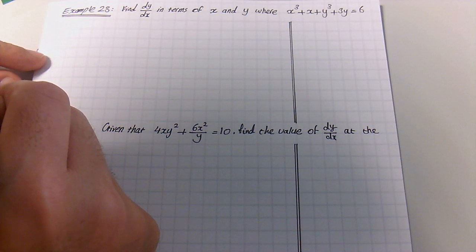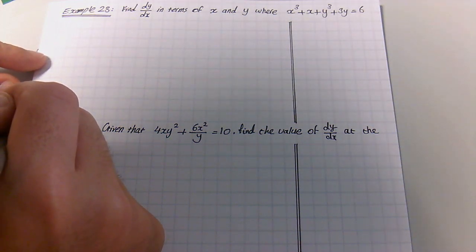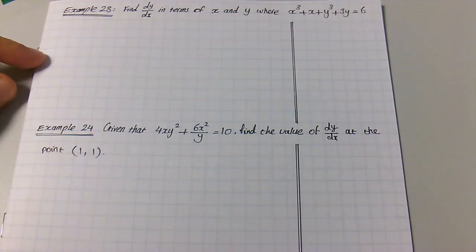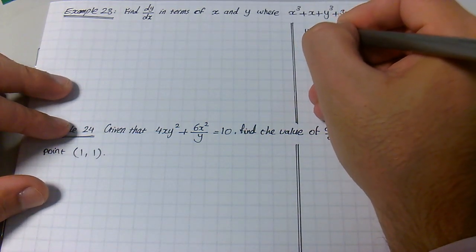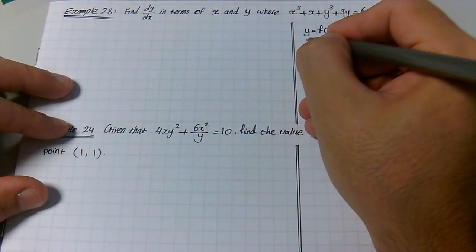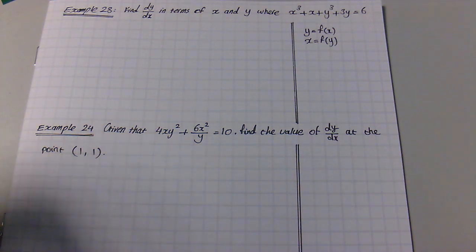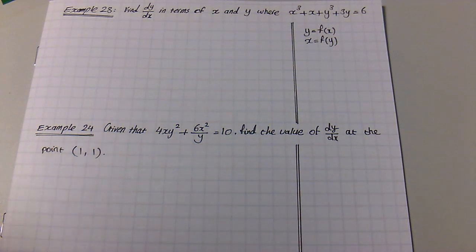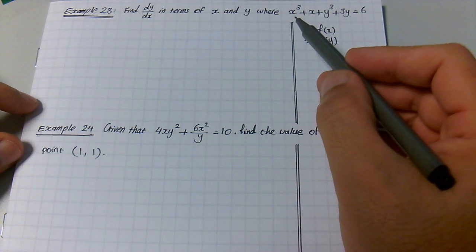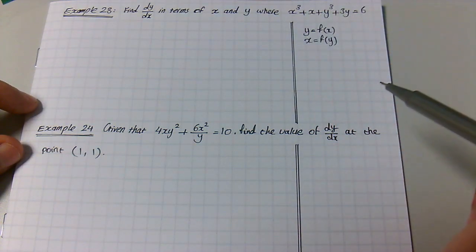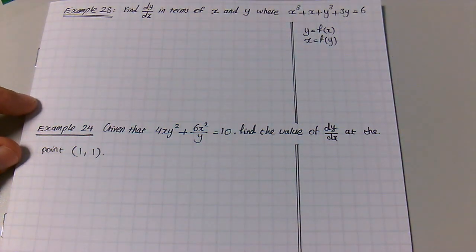In this video we will go through implicit differentiation, which is section 9.8 of chapter 9, Pure Mathematics 2. In most cases previously we had either y in terms of x — y = f(x) — or x in terms of y, which we could easily differentiate. However, implicit differentiation is used for equations with a combination of x and y together that we cannot easily rearrange for either x or y. For example, x³ + x + y³ + 3y = 6 — it is not possible to rearrange this for y.